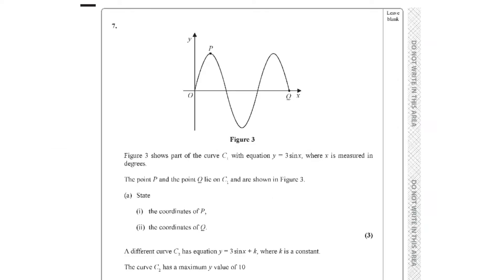Question 7. We are given a figure that looks like a sine curve. Figure 3 shows part of the curve C1 with the equation y equals 3 sine x, where x is measured in degrees. The points P and Q lie on C1 and are shown in the figure. Part A asks for the coordinates of P, and part 2 asks for the coordinates of Q. This question has three marks.